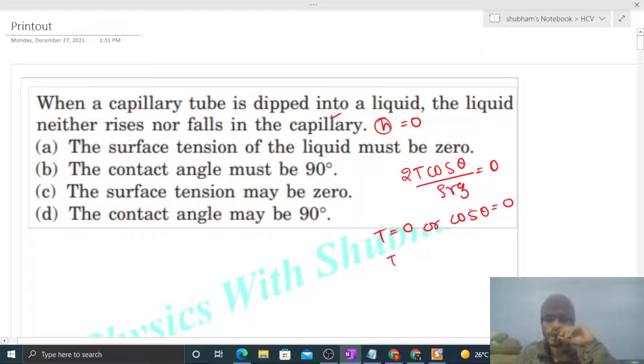It means either T is equal to zero or theta is equal to 90 degrees. It means maybe that surface tension is equal to zero or this contact angle may be 90 degrees. So option C is correct and option D is also correct.